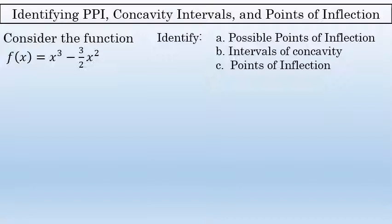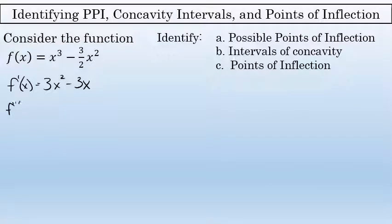To find the possible points of inflection, you need the second derivative. So in this function, the first derivative would be 3x squared minus 3x, and the second derivative is 6x minus 3.